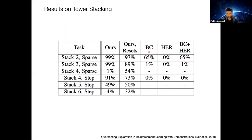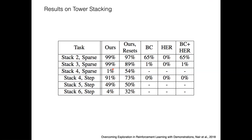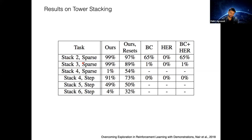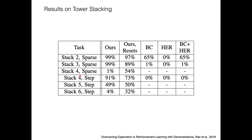Performance comparison: behavior cloning versus their method versus their method with resets. Don't pay too much attention to the resets, but notice the significant performance gain from applying Q-filtering over plain behavior cloning. A clarification on the metrics: 'stack 4 sparse' means you only get a reward if you stack all four blocks, while 'stepwise' means you get a reward for stacking every individual block — two different reward setups.